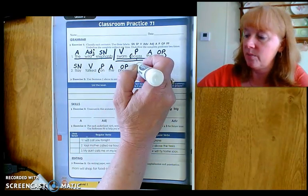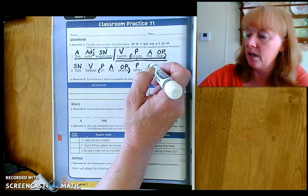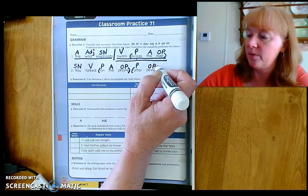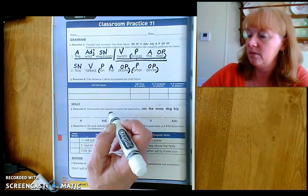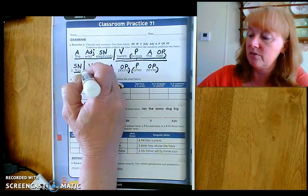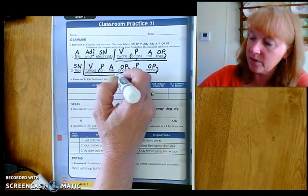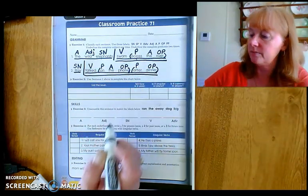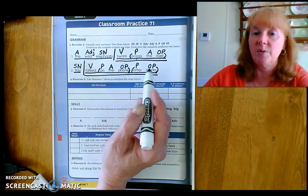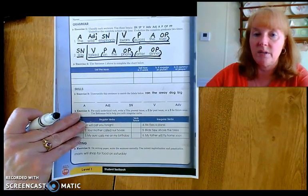After. Preposition. After what? Dinner. Object of the preposition. After dinner. Prepositional phrase. Go back to the verb. Divide the complete subject from the complete predicate. Underline the complete subject once and the complete predicate twice. Okay. So that's one of those sentences that had two prepositional phrases. Always more interesting that way.